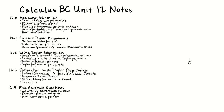Then we learned about the Lagrange error bound. In the last lesson, we looked at some AP free-response questions from recent years, remembered that we could find the interval of convergence for a power series using the ratio test, and did more error bound practice.